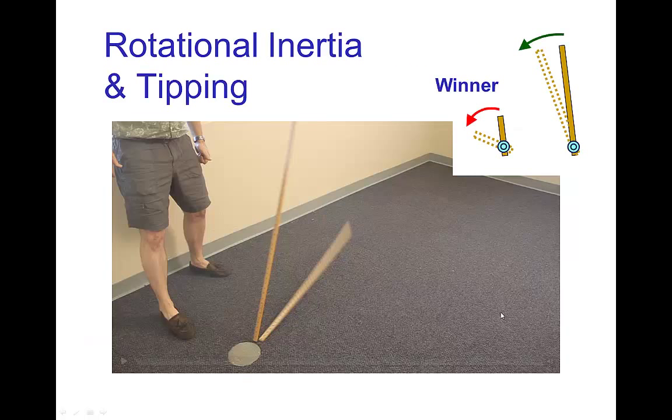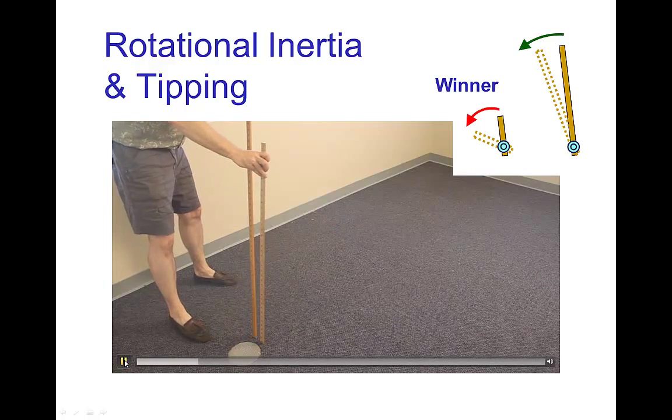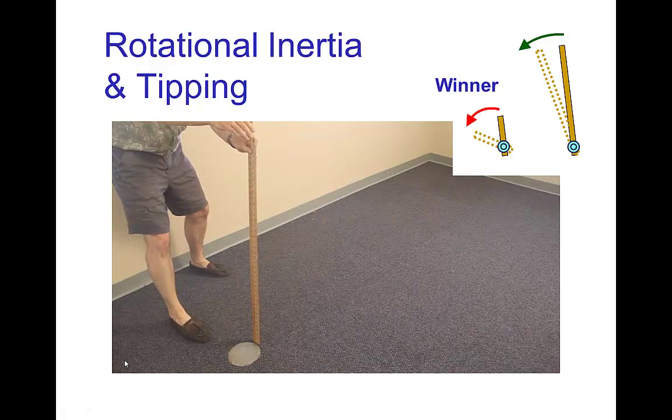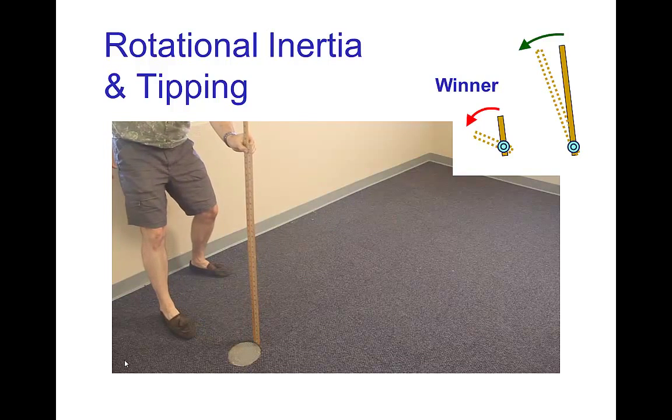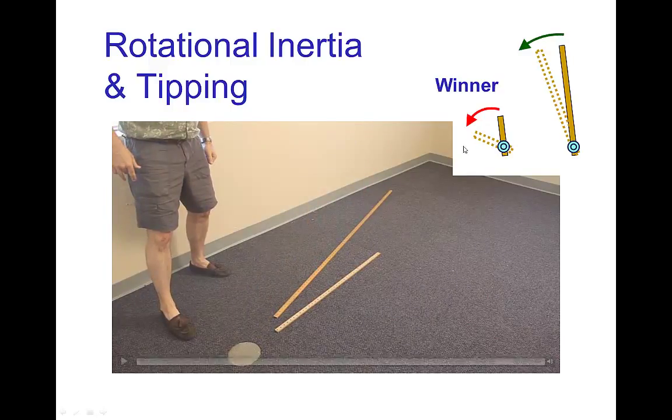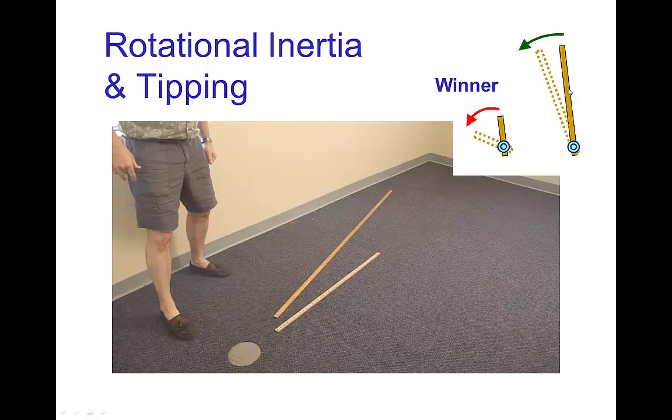We have the same thing with sticks of different lengths. So here I have a stick which is twice the length of the short one and you'll see that the short one swings down and hits the ground sooner. In a sense, its center of gravity is closer to the ground than the long stick and so it reaches the ground sooner.